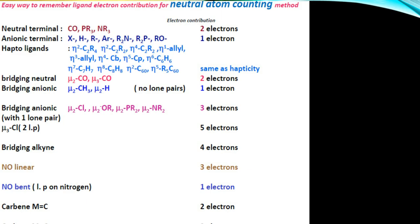Neutral ligands like CO, PR₃, NR₃ have a contribution of 2 electrons. H⁺ has 0 electrons, H⁻ has 1 electron. For bridging neutral ligands, there's also a 2-electron contribution. Bridging anionic with no lone pair has 1 electron.